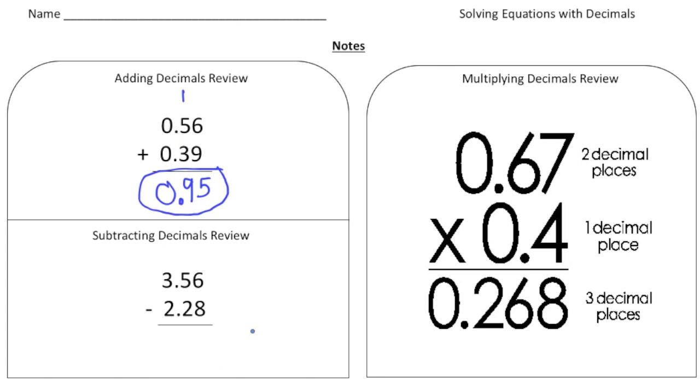Same thing for when you subtract. Here we have 3.56 minus 2.28. Notice that the decimals are lined up. Now we have to subtract. I can't take away 8 from 6, so I have to borrow. Make that a 4 and make that a 16. 16 take away 8 is 8. And now 4 take away 2 is 2, and then 3 take away 2 is 1. And the decimal goes straight down. So this is 1.28.